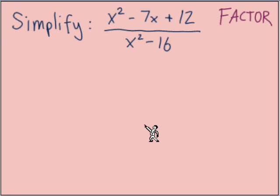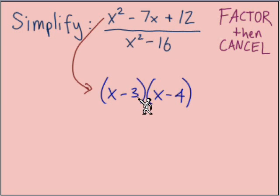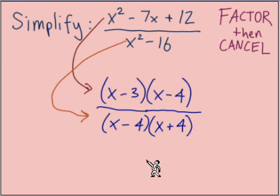Simplifying this expression starts with factor, and then it's cancel. The numerator, we have a trinomial to factor: it's x minus 3 times x minus 4. The denominator, it's a difference of squares. Factoring that leaves us with x minus 4 times x plus 4. There's our step 1 factor.